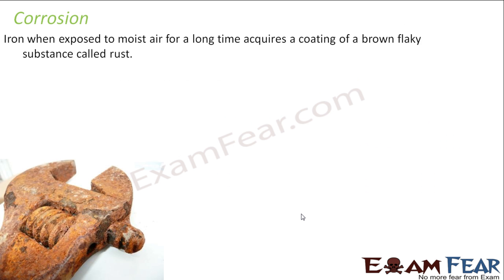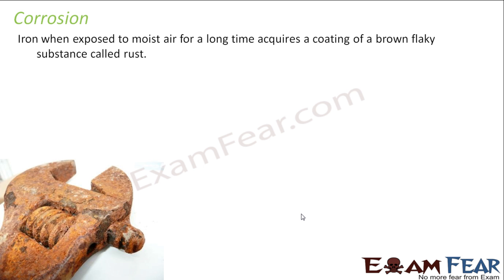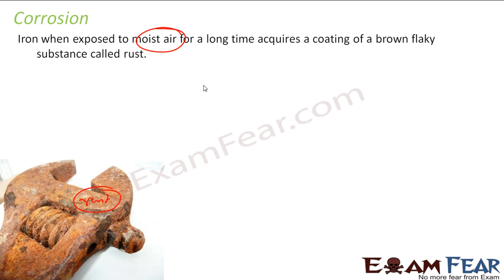Now let's start with the new topic called corrosion. What is corrosion? When iron is exposed to moisture for a long time, it gets this brown flaky substance. This is called rust, and this is called corrosion. In corrosion, if you see iron, it reacts with oxygen and gives Fe₂O₃.